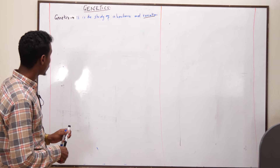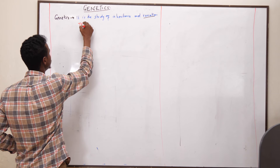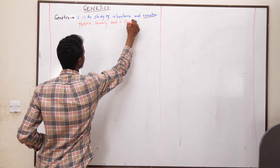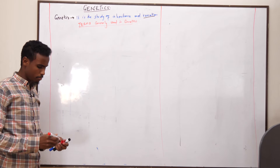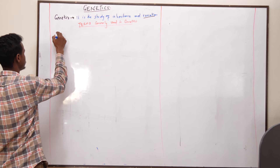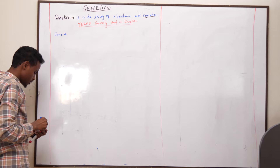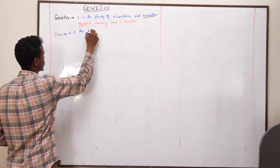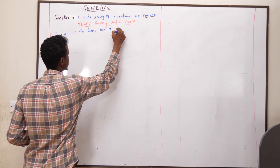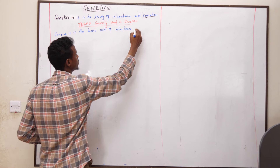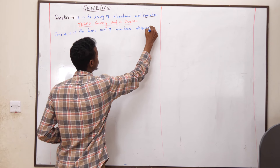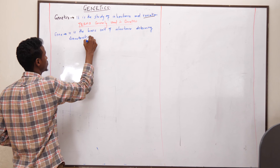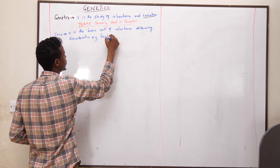Now we go to terms commonly used in genetics. The first term commonly used in genetics is called the gene. The gene is the basic unit of inheritance, determining characteristics such as height and blood group.